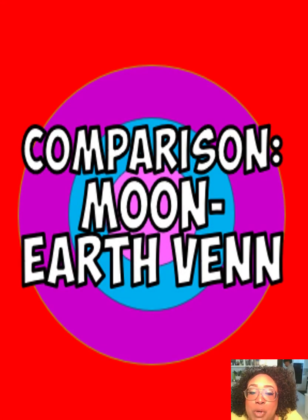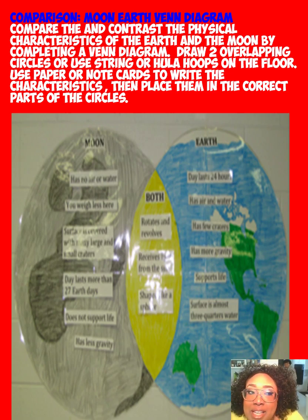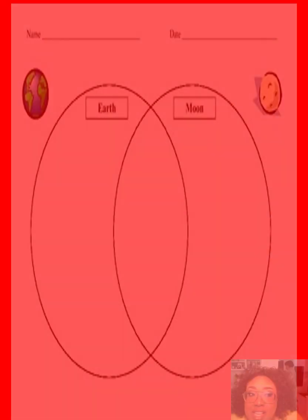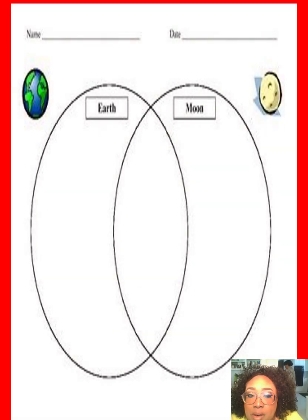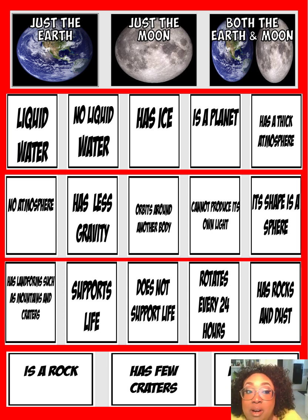Our Moon Earth Venn Diagram. Overlap them — whether it's string, belts, hula hoops, paper plates, you know what to do. You know how to get creative. Like on paper, but you don't have to do it on paper — you know how to do it 3D style. Characteristics: just the earth, just the moon, both the earth and the moon, and a list of characteristics. If you can think of some more, please feel free to add your own.